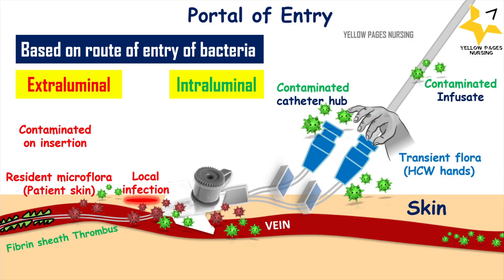In extraluminal, the insertion of a vascular access device causes a break in the skin, which exposes the patient to increased risk for local, systemic, and bloodstream infections. Microorganisms on the patient's skin can colonize the catheter during insertion. In intraluminal, microorganisms can colonize from a contaminated hub or from a vascular access device when these devices are accessed or manipulated for medication administration and cleaning. Microorganisms can also colonize through contaminated fluids and medications administered through the vascular access device.